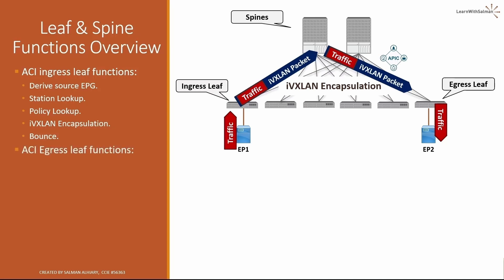ACI egress leaf functions include: IVXLAN decapsulation or termination; station lookup — if the source endpoint is not already learned, the egress leaf learns it and adds it to the station table, which is important for return traffic; policy lookup — in case the policy was not applied at the ingress leaf, the egress leaf will apply it; and finally, egress port selection, to find the egress port towards the destination.